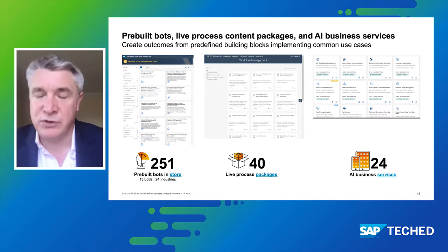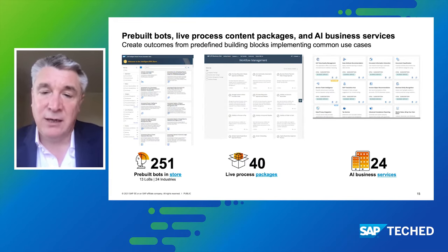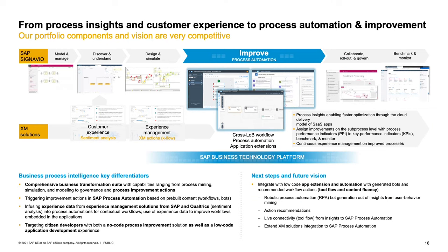We've not stopped there — we're also leveraging AI and machine learning to further differentiate. Pulling all of this together gives us the ability to execute a true end-to-end story: from process insights combined with customer experience data captured via Qualtrics, to benchmarking process improvement opportunities, executing that improvement capability, and monitoring through our process visibility — creating a continuous virtuous circle of process excellence delivered across the entire organization.